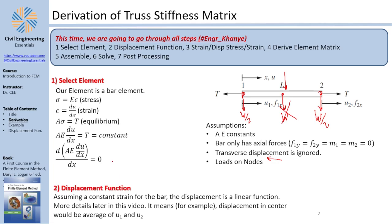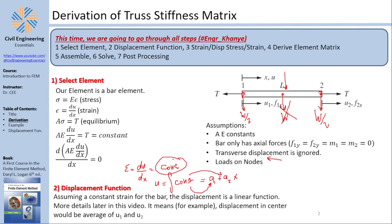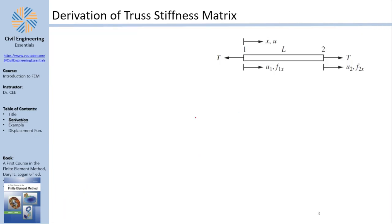For the displacement function, we assume a constant strain in the bar. Strain is the derivative of displacement. If you assume the derivative to be constant and integrate, you get u = a1 + a2·x, where a2 is the constant strain and a1 is the integration constant. Assuming a constant slope gives a linear displacement function. More on this later in the video.